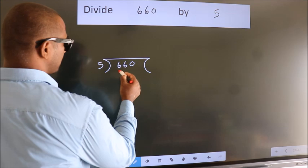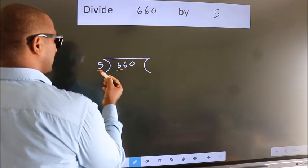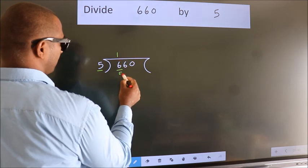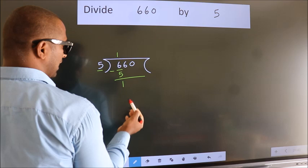Here we have 6. Here 5. A number close to 6 in 5 table is 5 once 5. Now we should subtract. We get 1.